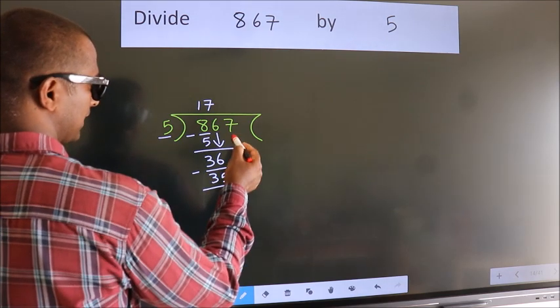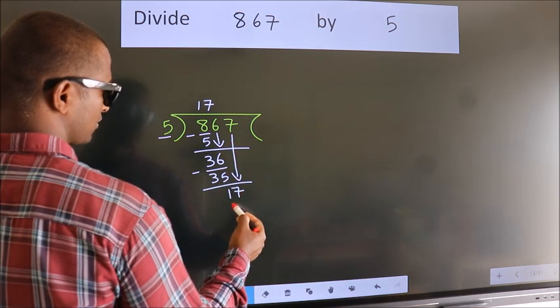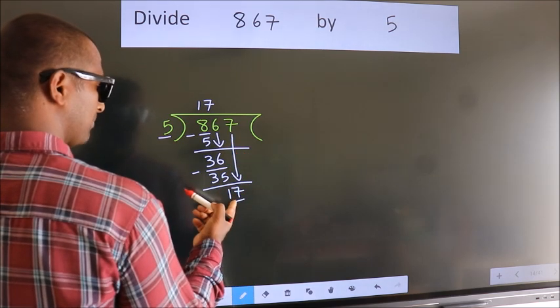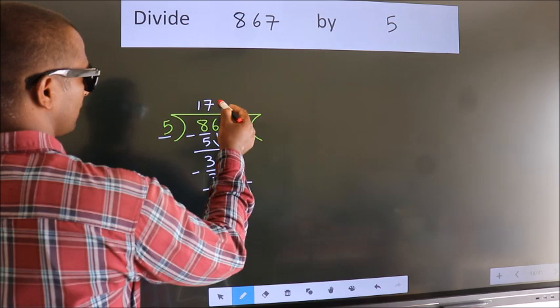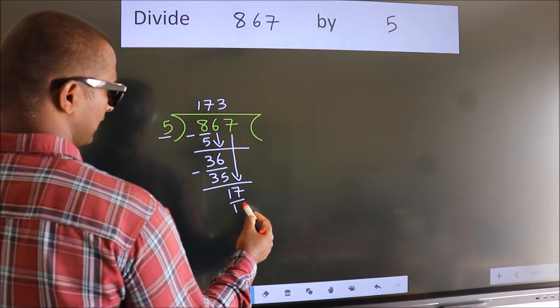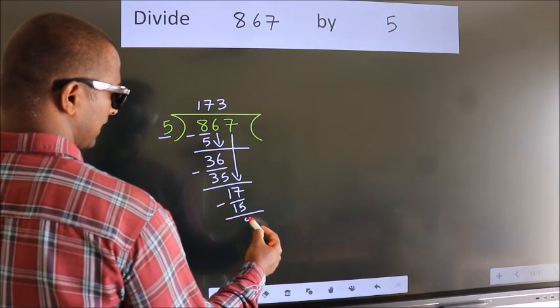After this, bring down the beside number. So 7 down. So 17. A number close to 17 in 5 table is 5 threes 15. Now we subtract. We get 2.